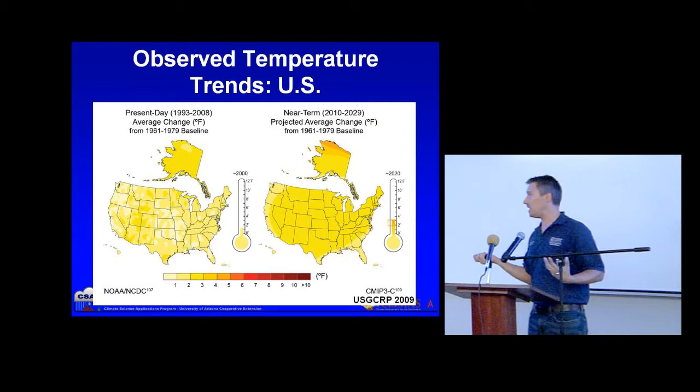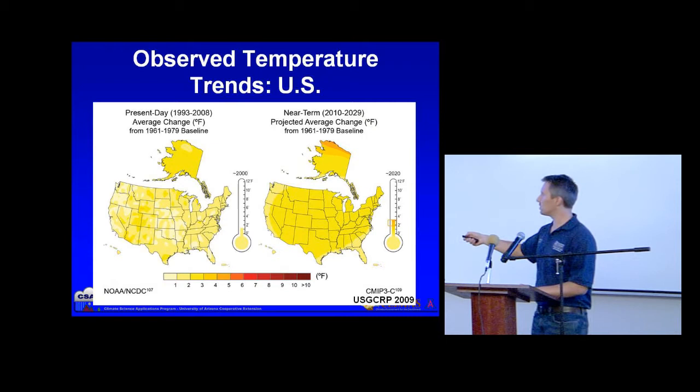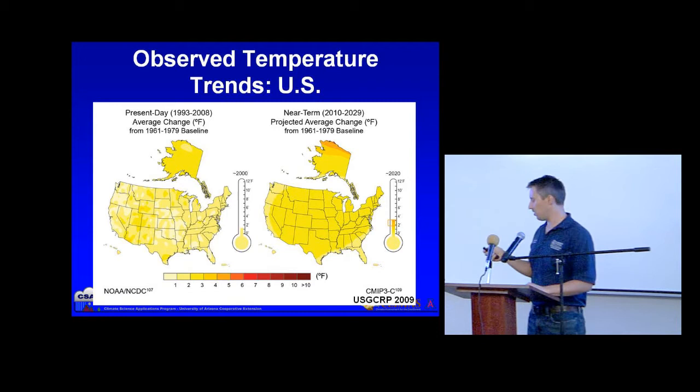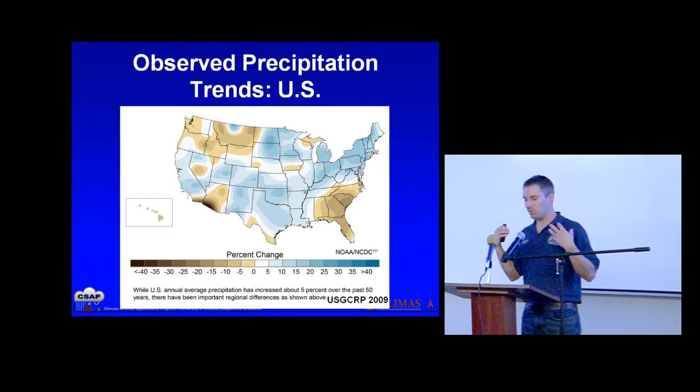We can also look at observational evidence of how things have changed spatially. This shows the average temperature changes across the U.S. — present day versus the baseline period of 1961 to 1979. All these yellow colors indicate warmer conditions. The southwest is very clearly warmer now than it was, and we see that pretty consistently across the record.